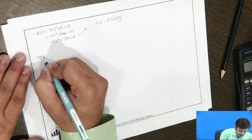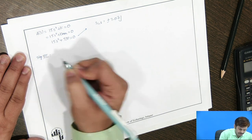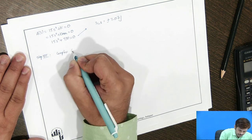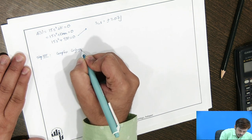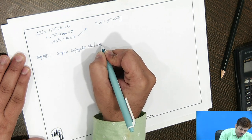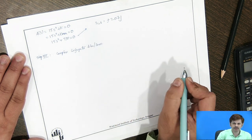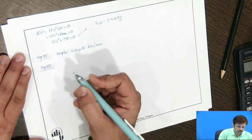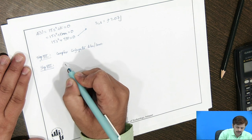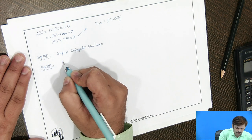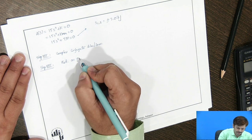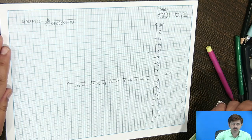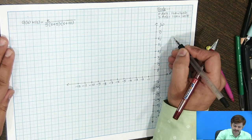Step number 7 is not applicable here because we do not have complex conjugate poles or zeros. Then in step number 8, we draw the final plot on the s-plane graph paper.